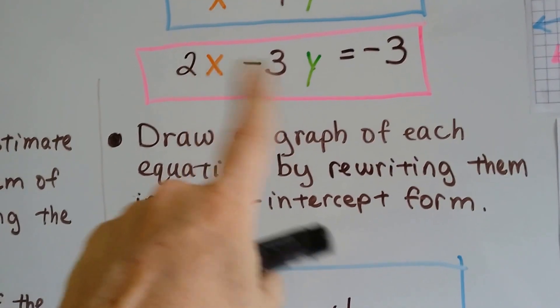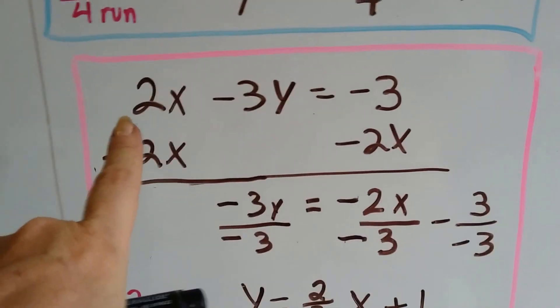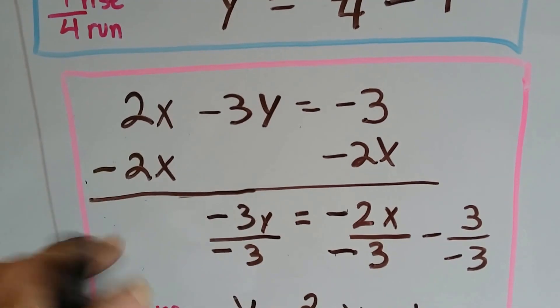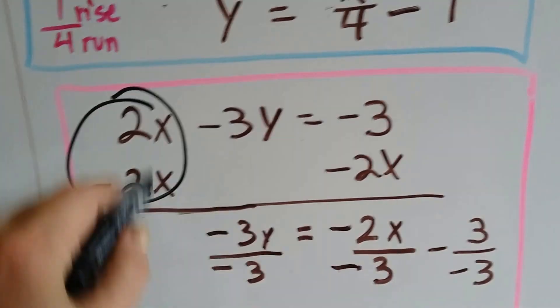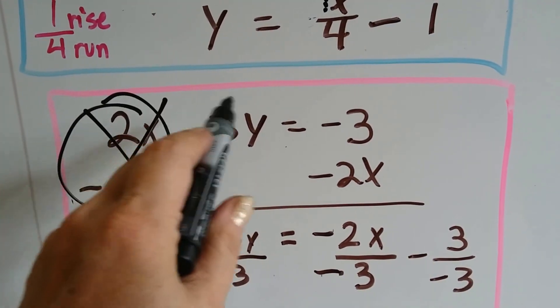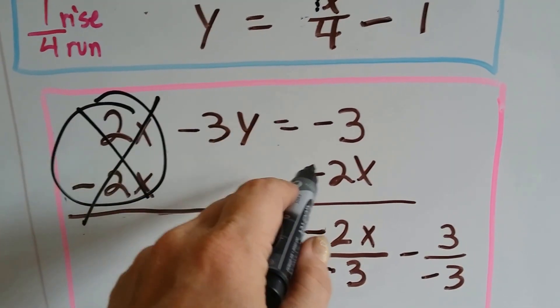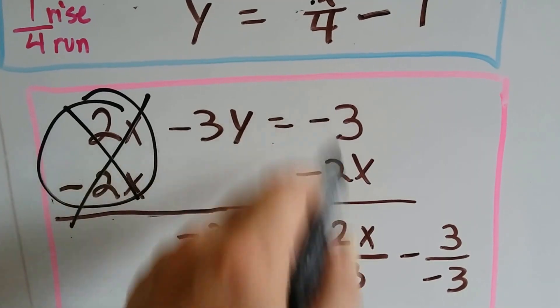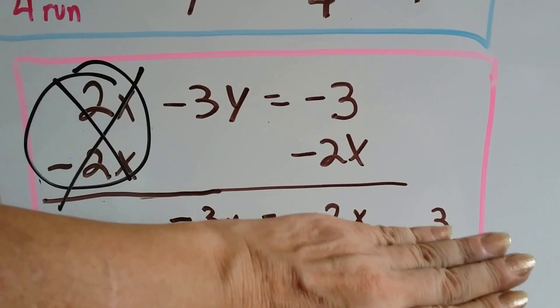All right, so now we can do this pink one, 2x minus 3y equals negative 3. We can take away 2x from each side. That creates a zero pair there, and that's eliminated. Now we've got negative 3y equals a negative 2x minus 3.